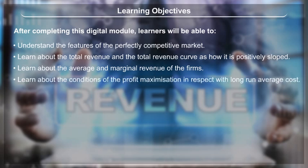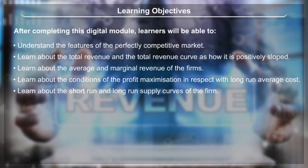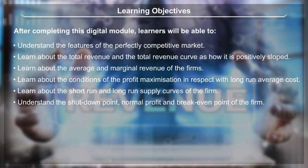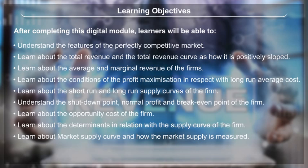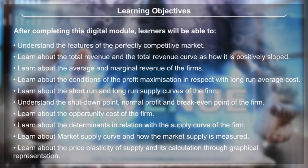Learners will also learn about the conditions of profit maximization in respect with long-run average cost, the short-run and long-run supply curves of the firm, the shutdown point, normal profit and break-even point of the firm, the opportunity cost of the firm, the determinants in relation with the supply curve of the firm, the market supply curve and how market supply is measured, and the price elasticity of supply and its calculation through graphical representation.